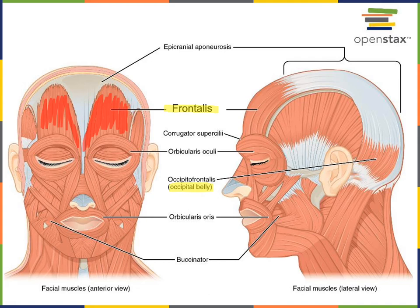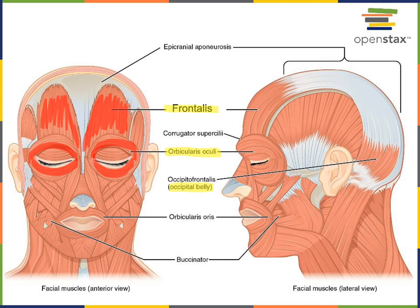Next we'll move down to orbicularis oculi. Orbicularis means this is a circular shaped muscle where the fibers surround the eye, surrounding the ocular region. We can see the circular shape of orbicularis oculi, and the action of this muscle is to close the eyelids. So while frontalis elevates the eyebrows, orbicularis oculi closes the eyelids.